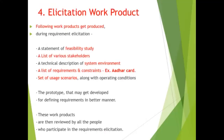The fourth step is elicitation work products. The following work products are produced during requirement elicitation: a statement of feasibility study, a list of various stakeholders, a technical description of the system environment, a list of requirements and constraints, a set of usage scenarios along with operating conditions, and a prototype that may be developed for defining requirements in a better manner. These work products are then reviewed by all people who participated in the requirements elicitation.